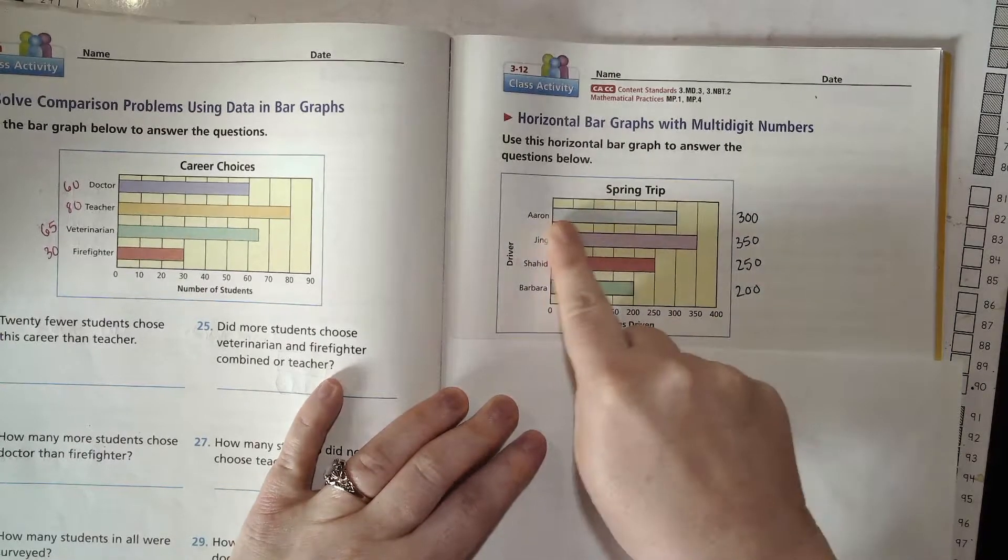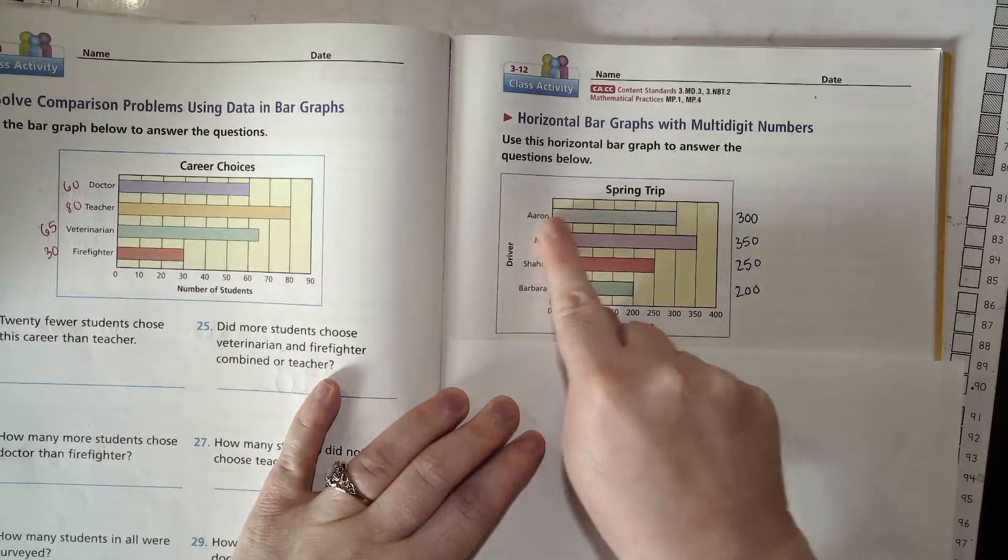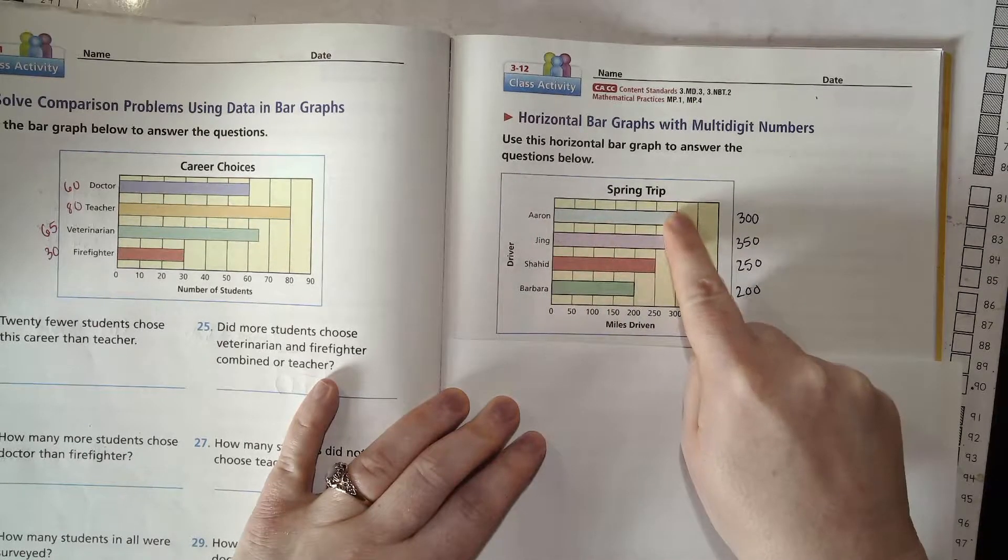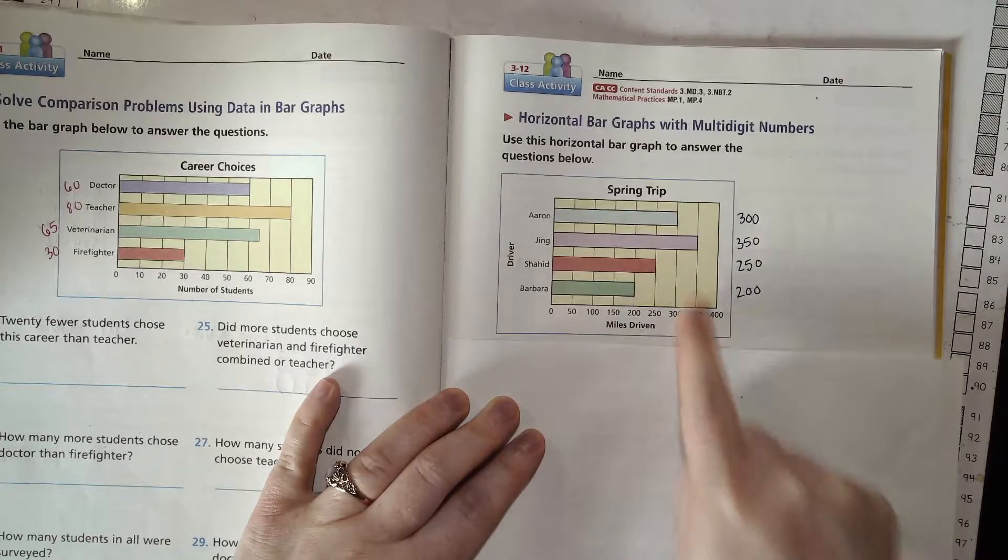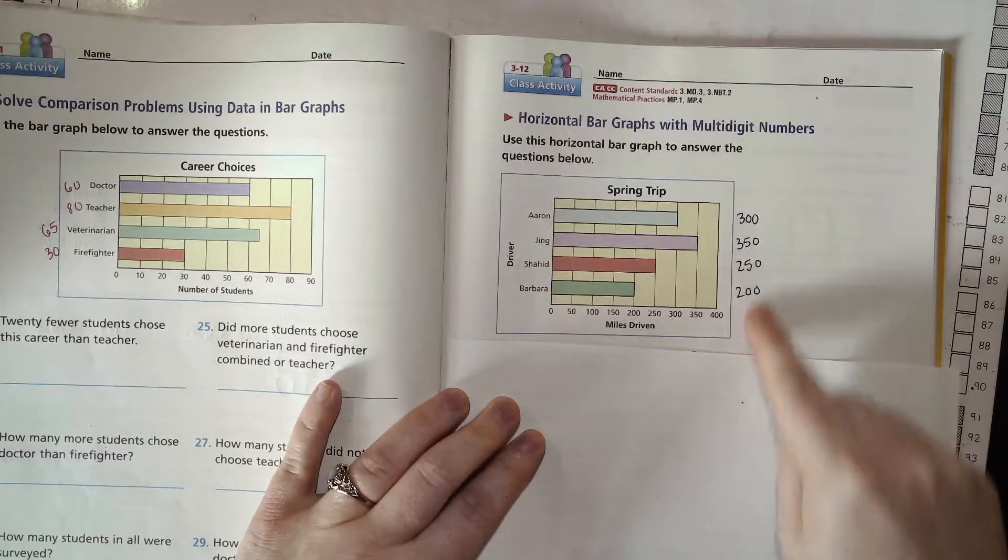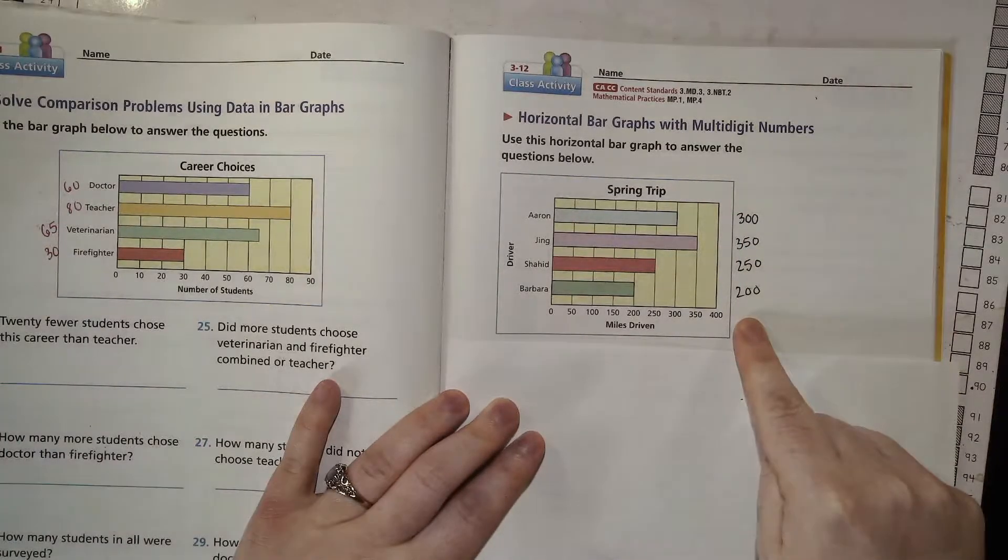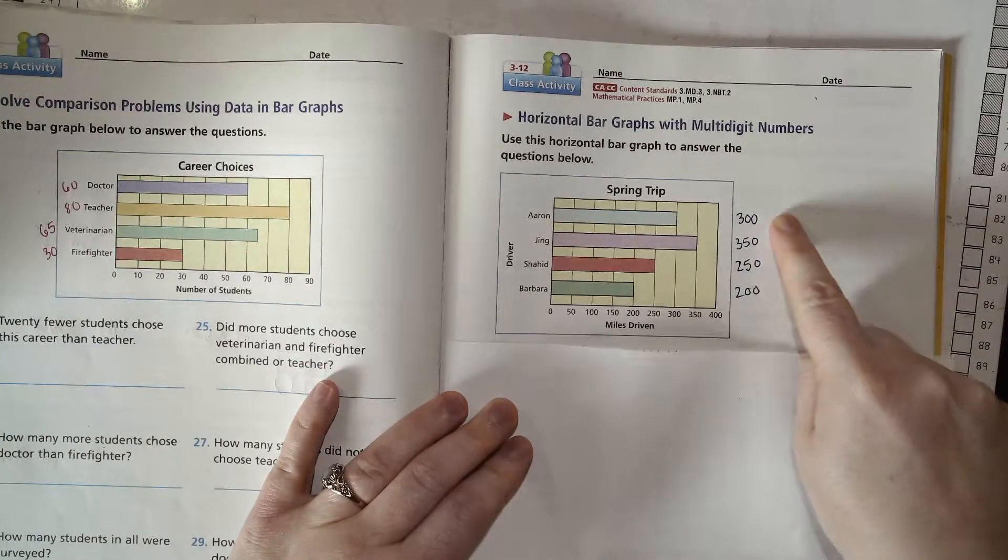And the way that we read how many miles each person drove was we go to the end of the bar and then follow that line down to the number on the x-axis down here on the graph. So I made a little note of how many miles each driver had driven. So Aaron did 300,